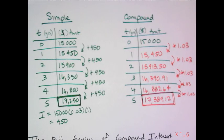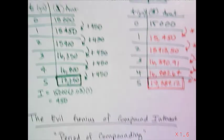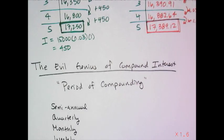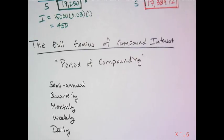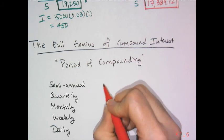The evil genius behind compound interest is a concept called the period of compounding. Instead of calculating interest once at the end of the year, you can break it into smaller chunks. Semi-annually means taking that 3% and dividing it by 2, charging interest once mid-year and once at the end of the year.